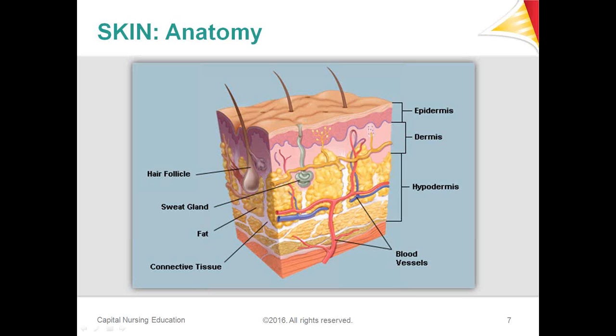The final layer, the subcutaneous layer, is comprised of connective tissue, fat, blood, lymphatic vessels, and nerves. There are thick bundles of collagen that anchor the dermis to the subcutaneous layer and other structures such as the fascia, muscle, and bone. Its function is to store energy and insulate the body.